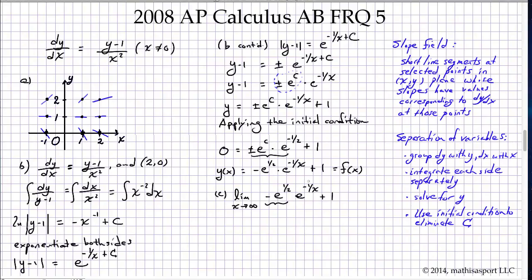Here, however, we have e to the negative 1 over a number that becomes very large. Negative 1 over a number that becomes increasingly large tends toward a limit of 0. e to the 0 is 1. And so this I'm going to write as just negative e to the 1 half times 1 plus 1.